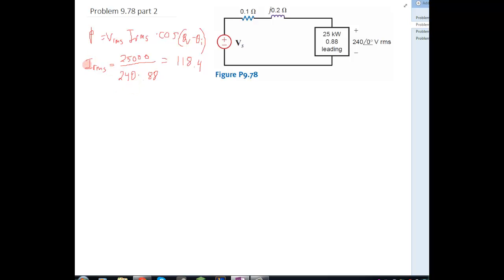So now we have the magnitude of Irms, now we just need the phase angle. We can get this by knowing that our power factor 0.88 is equal to the cosine of theta V minus theta I. So we already know that theta V is 0 volts. So theta I is the inverse cosine of 0.88, especially the negative inverse cosine of 0.88 because 0.88 equals the cosine of negative theta I. And this comes out to negative 28.53.